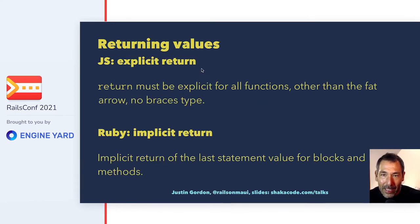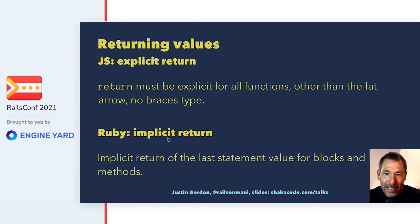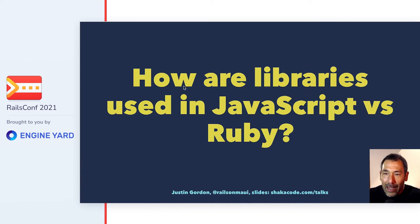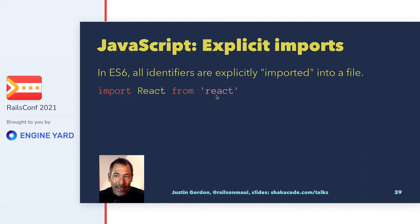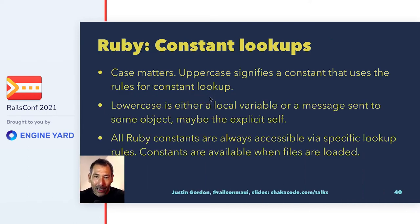Another implicit vs. explicit difference: in JavaScript you always need an explicit `return`; in Ruby you always have an implicit return for blocks and methods. Also in JavaScript everything is always explicitly imported — `import React from 'react'`. In Ruby you have constant lookup — you rarely see explicit imports in Ruby files. It's more of a global-style lookup based on case: lowercase means it's a local variable or a message sent to some object.